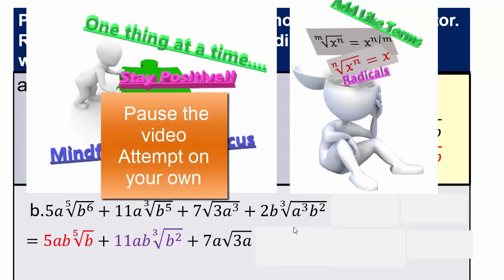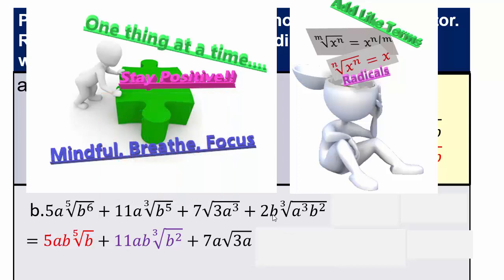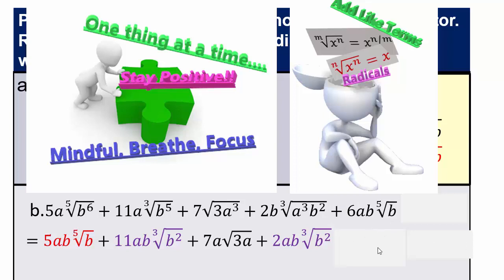Whatever is outside stays outside — the 2b on the outside will stay. So b plus 2b, and then whatever you get from simplifying: the cube root of a to the third is a, and the cube root of b squared — since 2 is smaller than 3 — we can't simplify further. So a to the third gives you an a outside that escapes the radical symbol, and b squared remains as b squared. For 6ab times the fifth root of b, there's nothing to simplify. And the last term is already in simplified form.